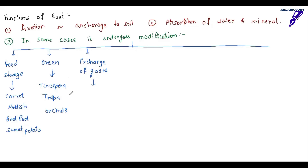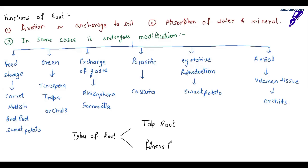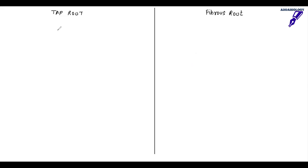Some roots grow against gravity for exchange of gases — example: Rhizophora, Sonneratia. Some roots are parasitic — example: Cuscuta. Some roots modify for vegetative reproduction — example: sweet potato. Some roots are present hanging in the air — example: orchids, which have a special tissue called velamen. There are mainly two types of roots: tap root, fibrous root, and also adventitious root. Tap root arises from the radicle, fibrous root arises from the base of the stem, and adventitious root arises from any part except the radicle.